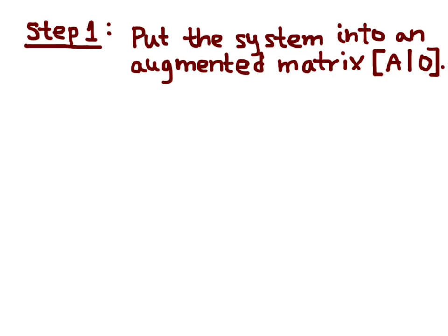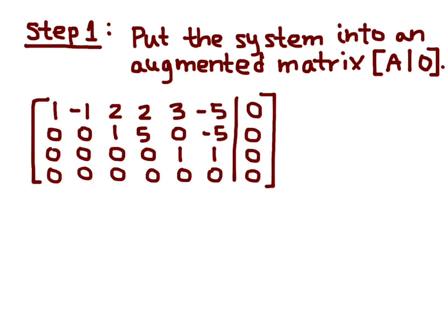Now, step one is to put the system into an augmented matrix with A on one side, and then the augmentation, and then your zero vector. So, I just put it into this matrix.